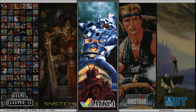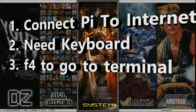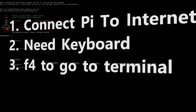Without further ado, the first thing you want to do is boot up your emulation station, get onto the Wi-Fi, and hook up a keyboard. Once the keyboard's hooked up, we can hit the F4 button. Once we hit F4, you can see my Wi-Fi is disabled but I'm connected via network. Once we're here, we're now at the command prompt, or terminal.